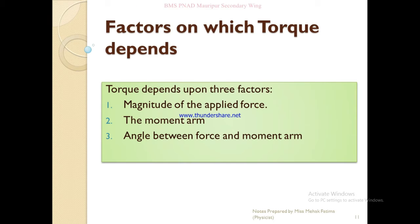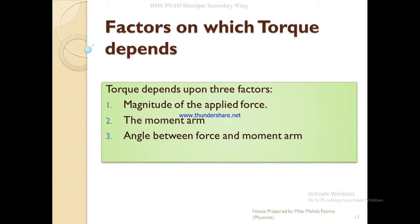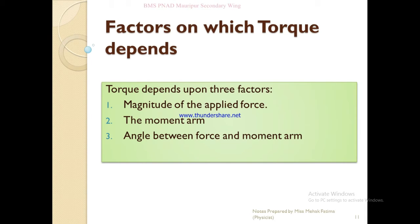When you rotate an object, you consider the perpendicular distance — the rotation and the direction of force. For example, when you open a door, you apply force. The moment arm is the perpendicular distance from the axis. The factors are: the angle between force and moment arm, and the magnitude of the applied force.